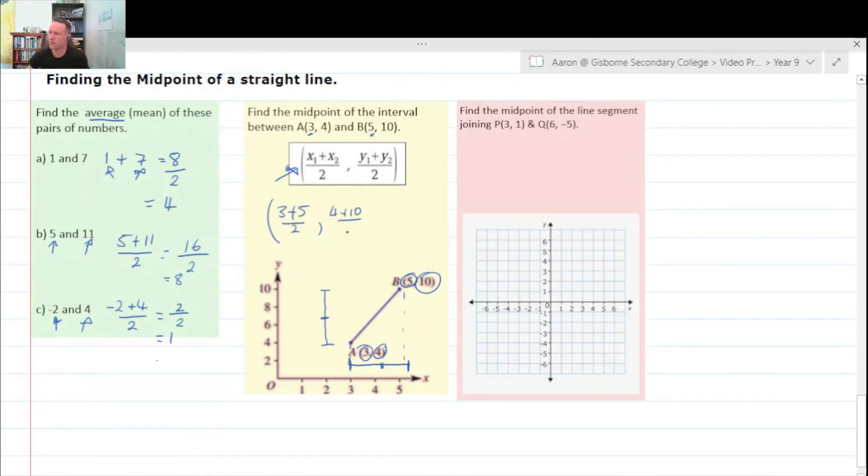Okay, now let's work that out. Three plus five is eight, so we're halfway there. And then we need to now half both of those values.